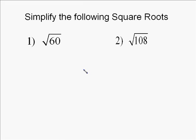To solve this problem, we're going to use the perfect square method of simplifying square roots. And to do this, what we do is we write out all the perfect squares.